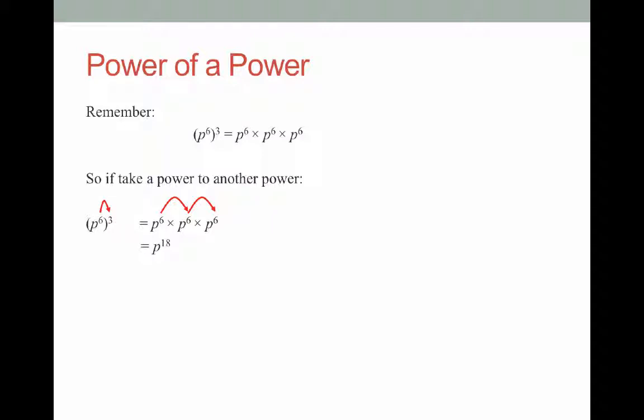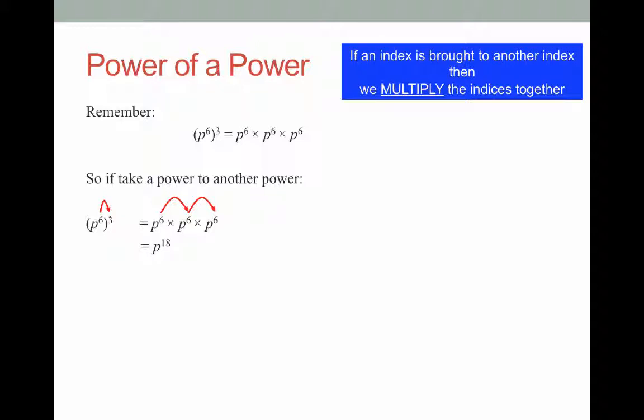What do you notice about the powers in the question and the power in the answer? If you said that multiplying 6 by 3 gives 18, you are absolutely correct. The rule is that if you have an index brought to another index, we multiply the indices together. In our example, 6 times 3 gives us 18.